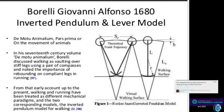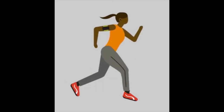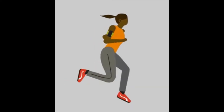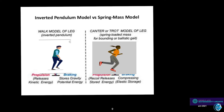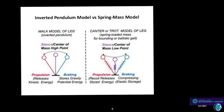The resemblance to pendulums and springs has not gone unnoticed, and was remarked on by Borelli — considered to be the father of biomechanics — in 1680. Over the centuries, running has been thought of as using a different mechanism than walking. There were two models: the pendulum model for walking, and the spring mass model for running. A key difference is that the center of mass is the high point in the pendulum model, but the low point in the spring mass model.